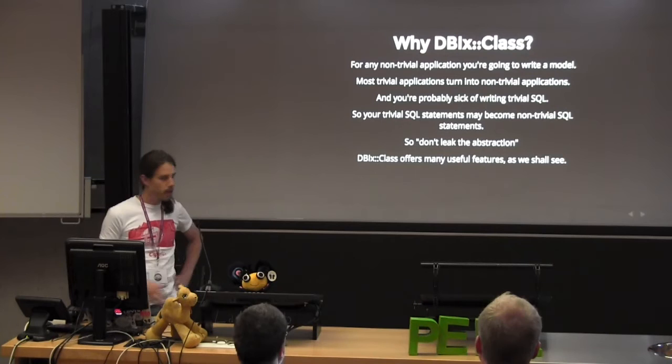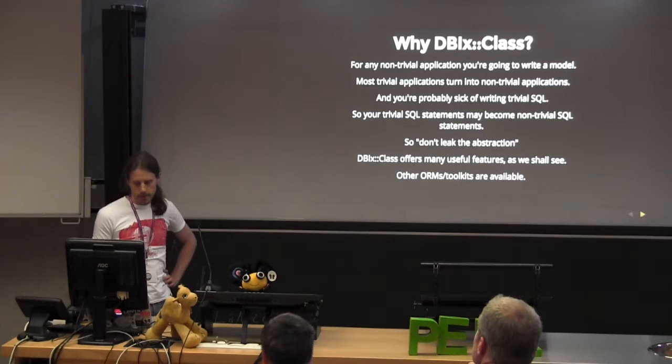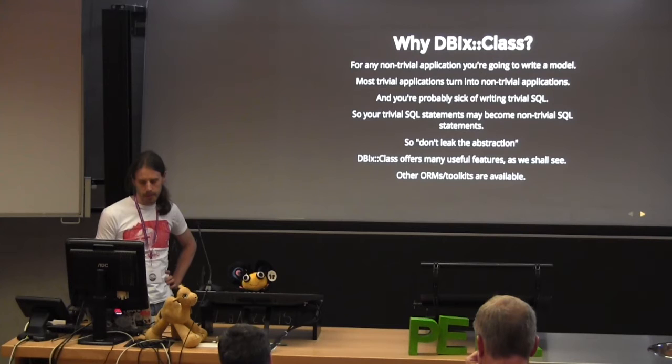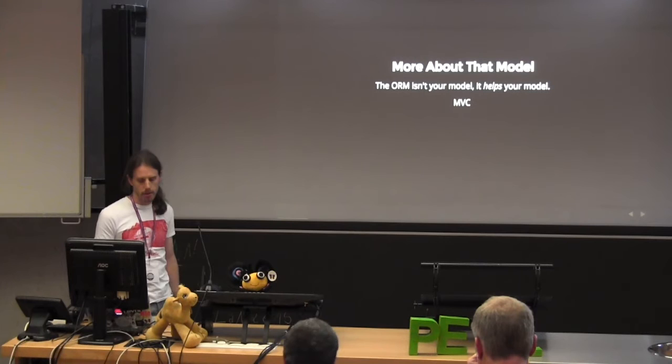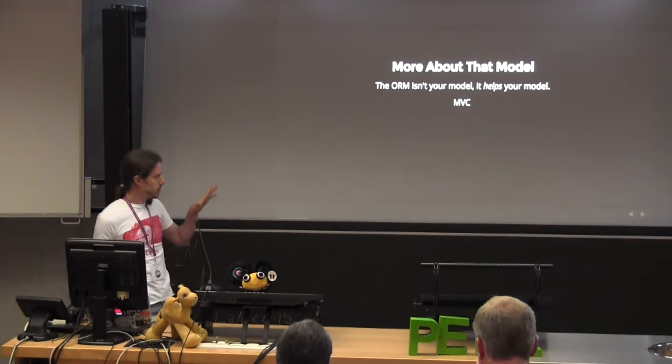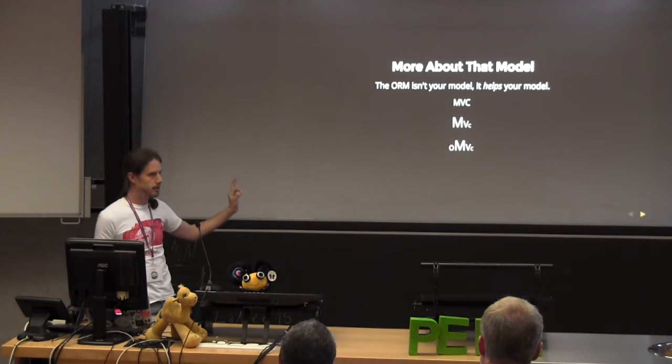DBIx::Class offers quite a few useful features in general, and for working with a legacy schema it has quite a few useful things you can do with it. Other ORM slash toolkits are available, but I'm concentrating on DBIx::Class here. A key distinction is that ORM isn't your model — some people get confused over this. It's something that helps your model. You have this typical MVC pattern in an app, and really it's more like a big M and a middle-ish V and a small C.